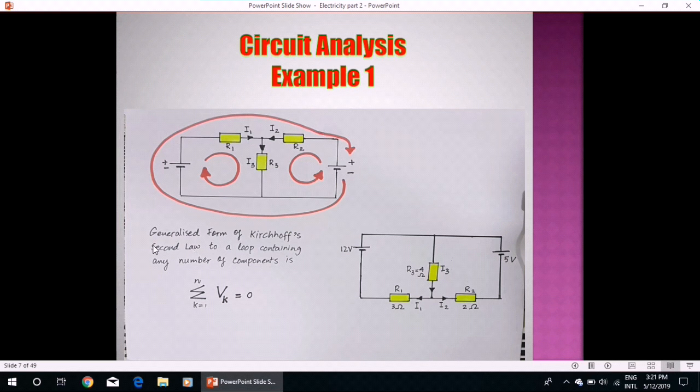Circuit analysis, example 1. Now, before I start these examples, generalized form of Kirchhoff's second law to a loop containing any number of components must be equal to sigma Vk is equal to 0, where k varies from 1 to n. Now, in this first example, I have drawn this circuit diagram containing three resistors: R1 equal to 3 ohm, R2 equal to 2 ohm, and R3 is equal to 4 ohm. I1 and I2 are current directions that flow towards from IR1 and R2, and I3 is the current flowing through R3, and directions are labeled like this. I1 and I2 are leaving the node, and I3 is entering the node. So, according to Kirchhoff's first law, sum of I1 and I2 must be equal to I3, and we will prove it in our next slide.